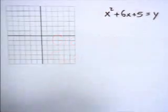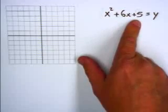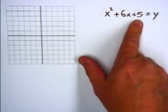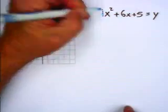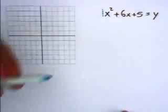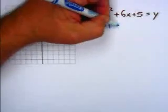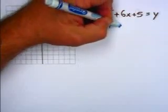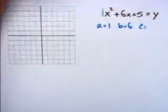Graphing quadratic equations. Here we have a quadratic equation: x squared plus 6x plus 5 equals y. We have to remember that the leading coefficient is 1, so we figure out what the coefficients are: a equals 1, b equals 6, c equals 5.